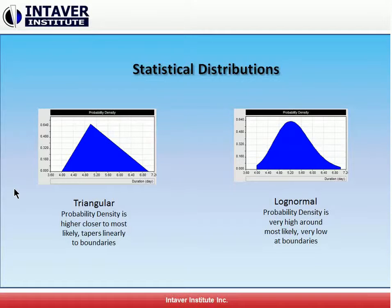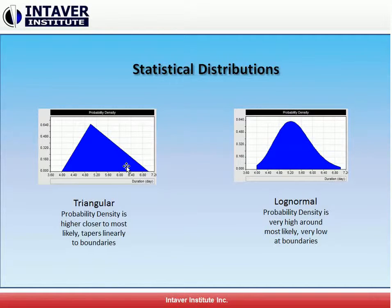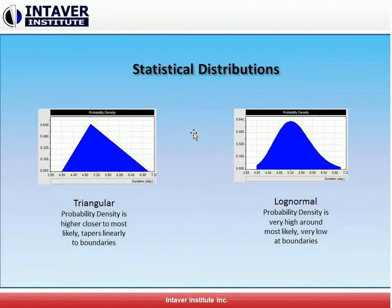Different distribution types have different shapes — for example, higher peaks or longer tails. But does this really make a significant difference? When we model activity durations, we're really modeling how long we think the activity will take to perform given uncertainties. We estimate the most likely, the lower optimistic duration, and the higher pessimistic duration, along with the statistical distribution. So we are providing boundaries as well as the shape to the expected results.